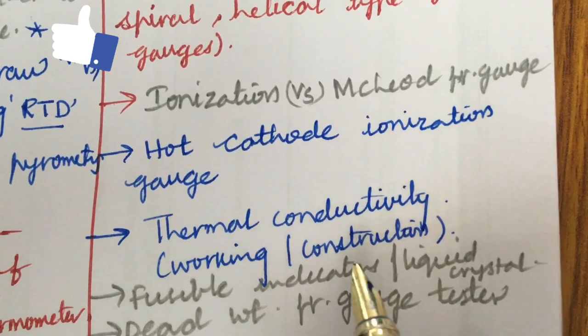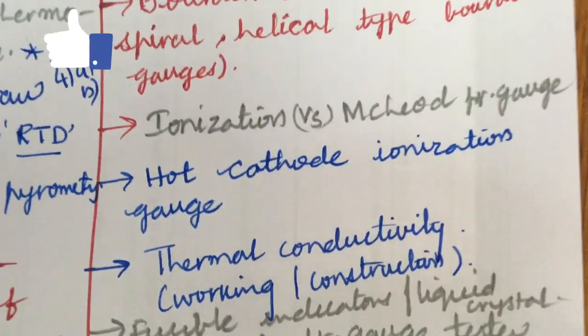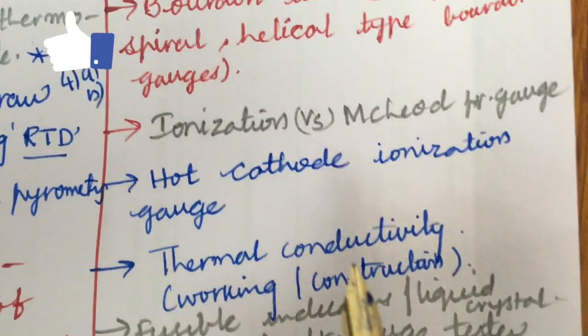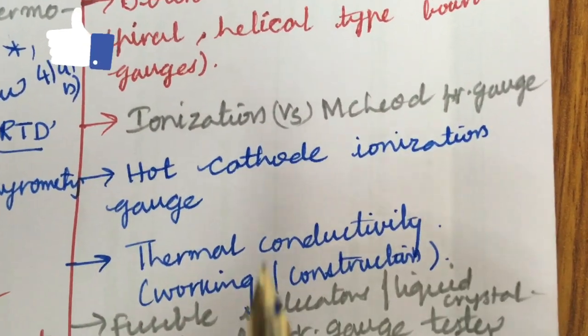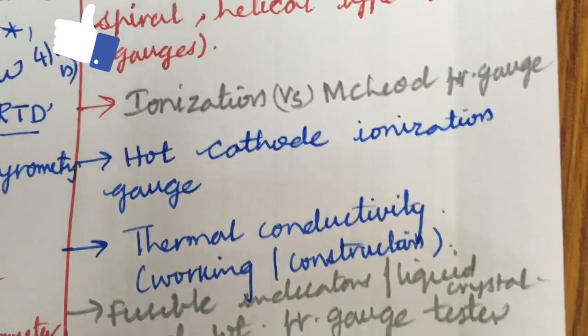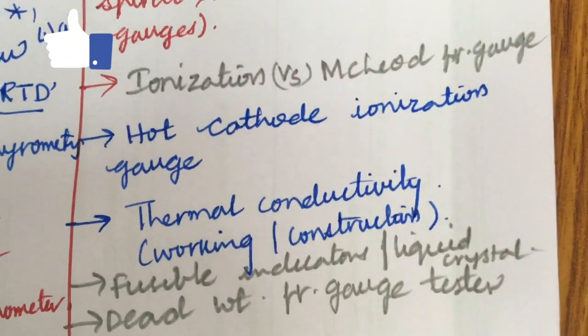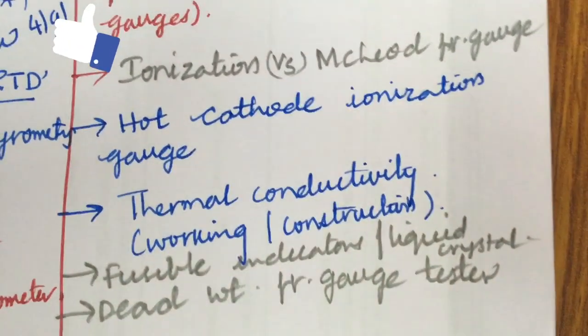Ionization versus McLeod pressure gauge, hot cathode ionization gauge and thermal conductivity working construction. I hope you are looking everywhere from Unit 1 to Unit 5, it is all about the working, construction, advantages, limitations and applications need to be written very neat as per the standard of this exam. I have made how to write a theory paper based on one question, the first question in my video, go and watch it to get out of full marks.